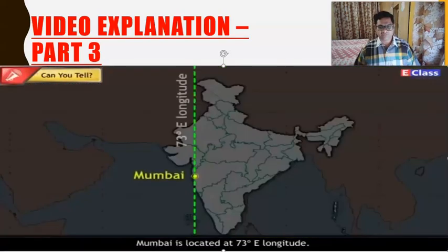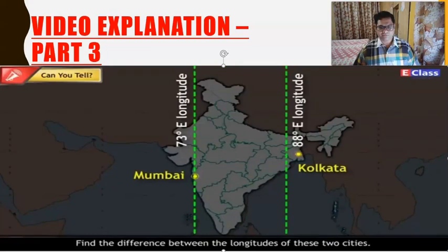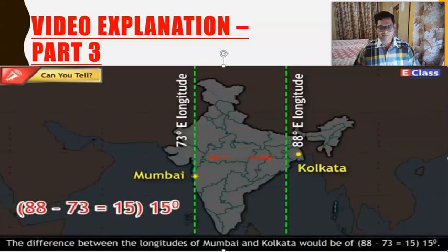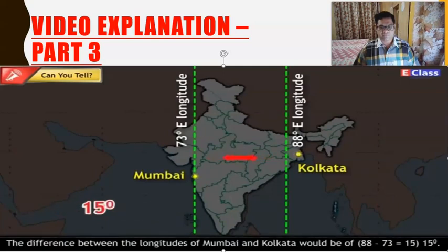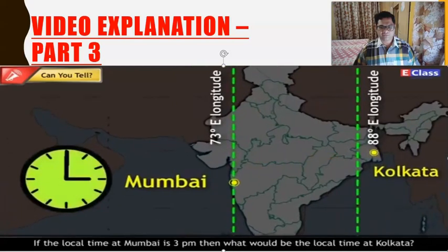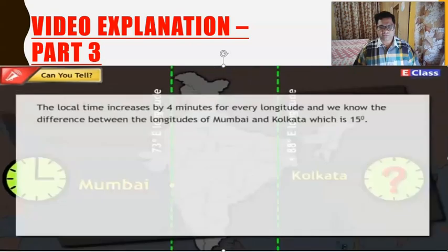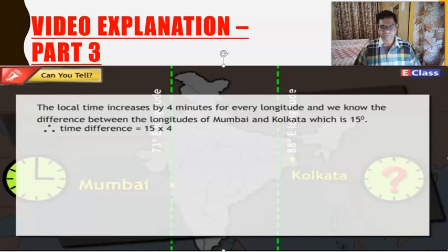Mumbai is located at 73° E longitude and Kolkata is located at 88° E longitude. Find the difference between the longitudes of these two cities. The difference between the longitudes of Mumbai and Kolkata is 88 minus 73, which equals 15 degrees. If the local time at Mumbai is 3 p.m., what would be the local time at Kolkata? The local time increases by four minutes for every degree of longitude, and the difference between the longitudes of Mumbai and Kolkata is 15 degrees. Therefore, the time difference is 15 multiplied by 4, which equals 60 minutes, or 1 hour.